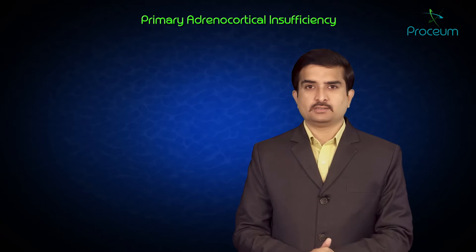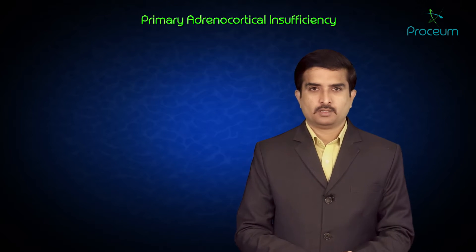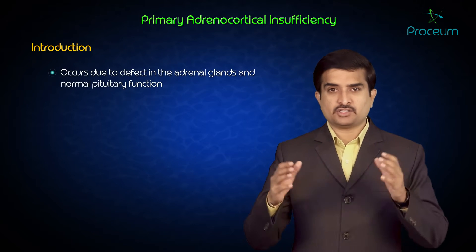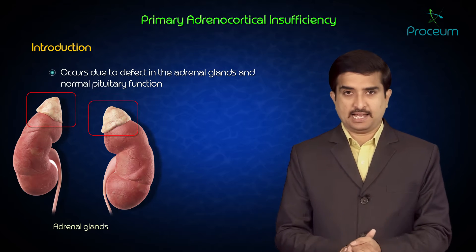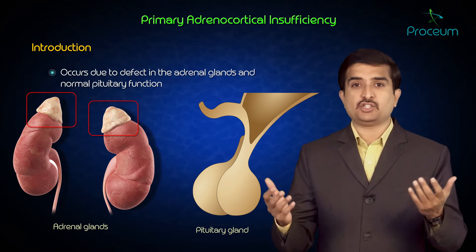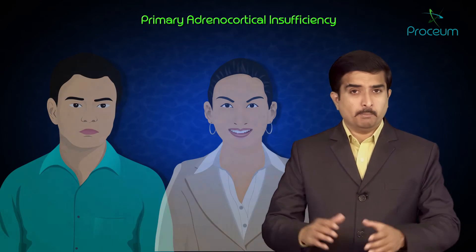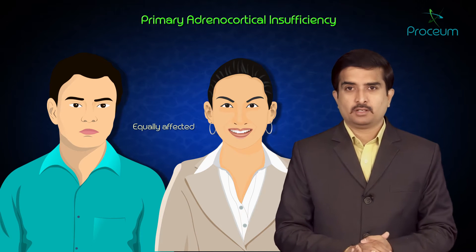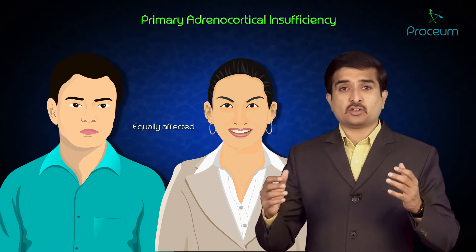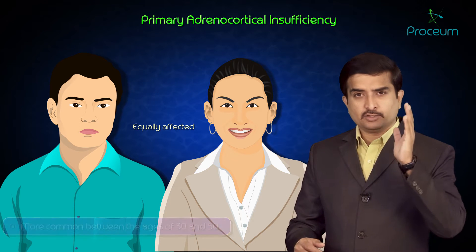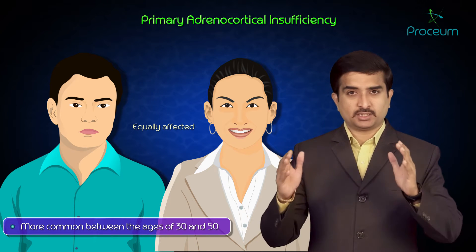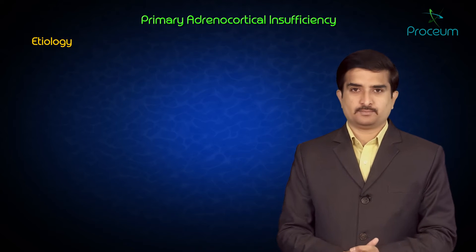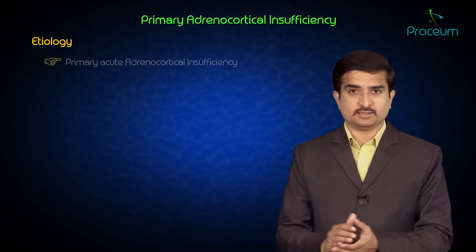Primary adrenocortical insufficiency occurs due to a defect in the adrenal glands with normal pituitary function. Men and women are equally affected, and although all ages are affected, it is more common between the ages of 30 and 50.